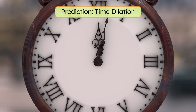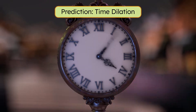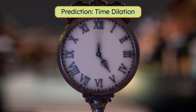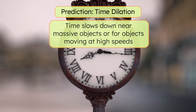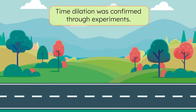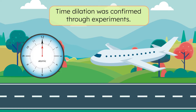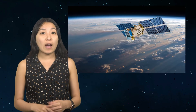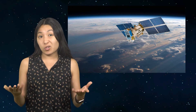Another early prediction of relativity is time dilation — the idea that time doesn't tick at the same rate everywhere. Einstein showed that time slows down near massive objects, or for objects moving at high speeds. This concept was later confirmed through experiments using atomic clocks placed at different altitudes or moving at high speeds. It's actually crucial for modern technology: GPS satellites orbit Earth in weaker gravity than we experience on the surface, so their clocks tick slightly faster. Without accounting for this effect, GPS systems wouldn't work.